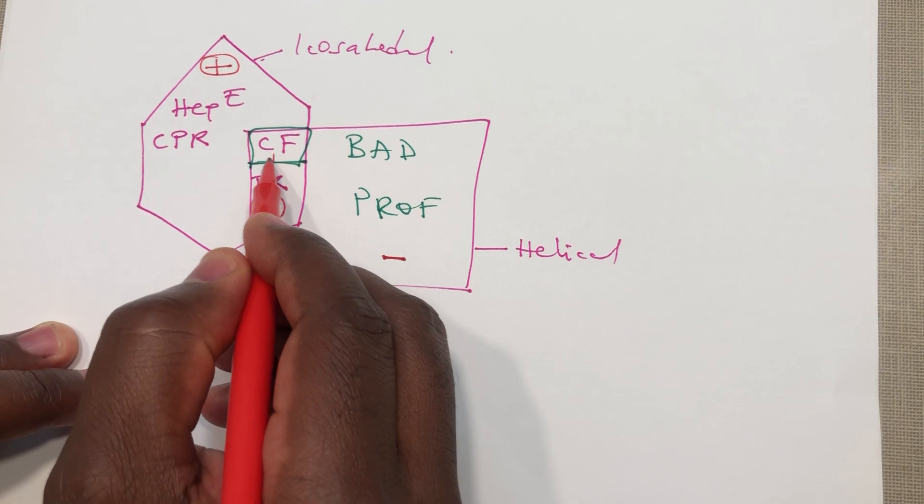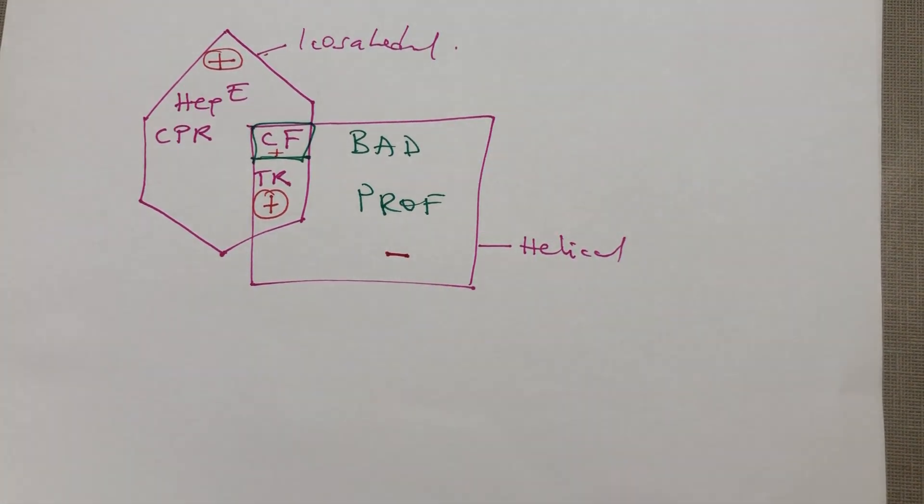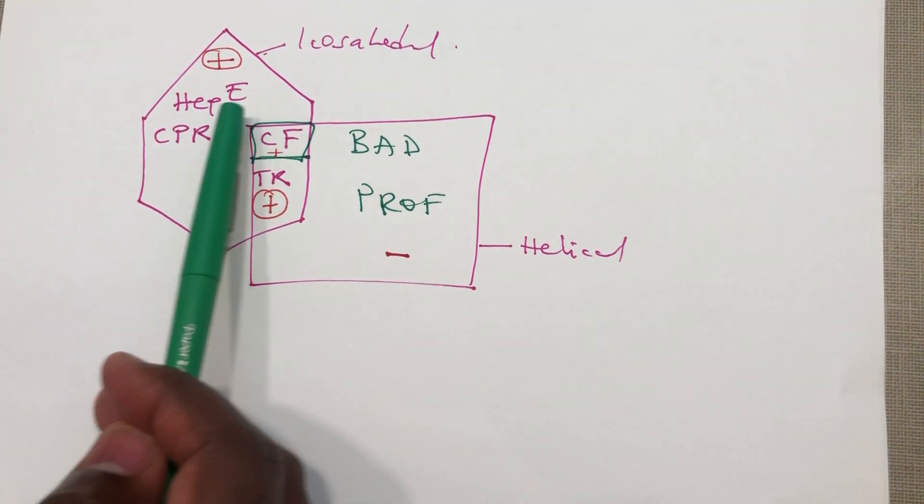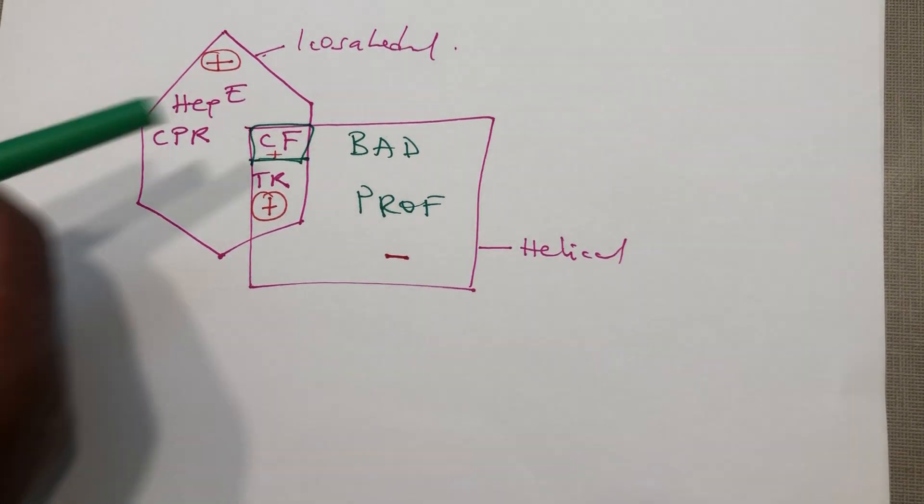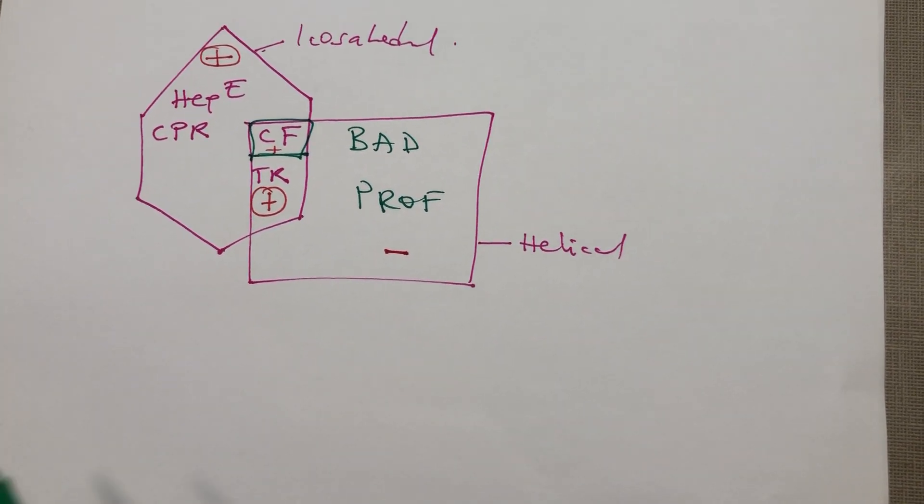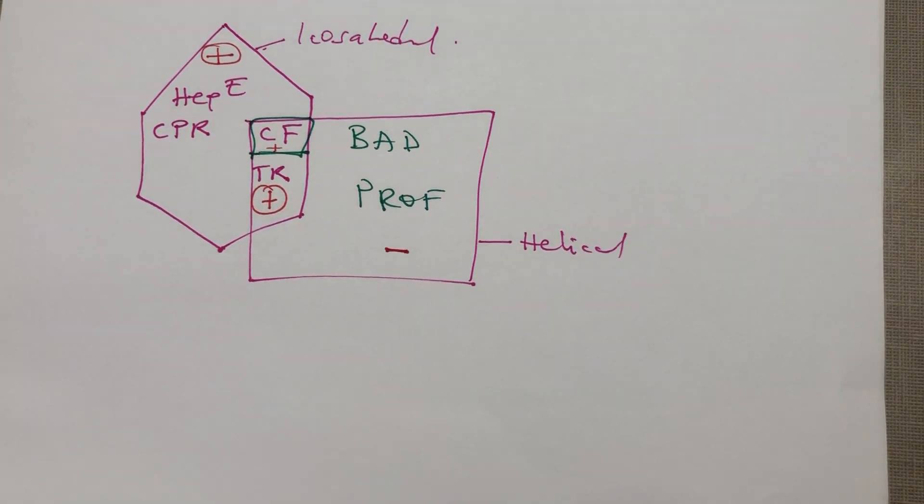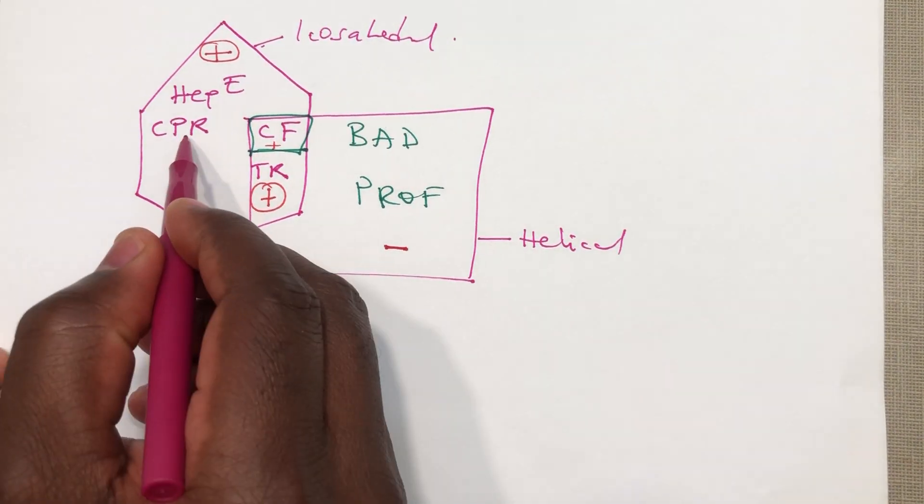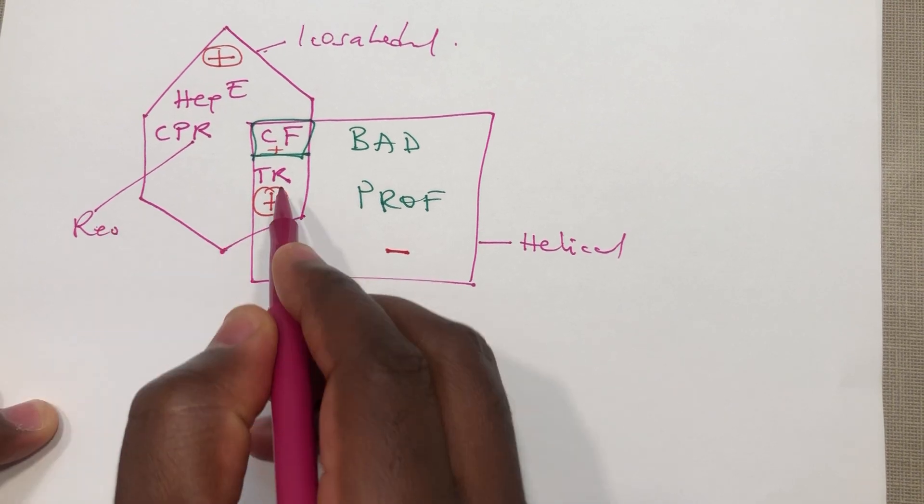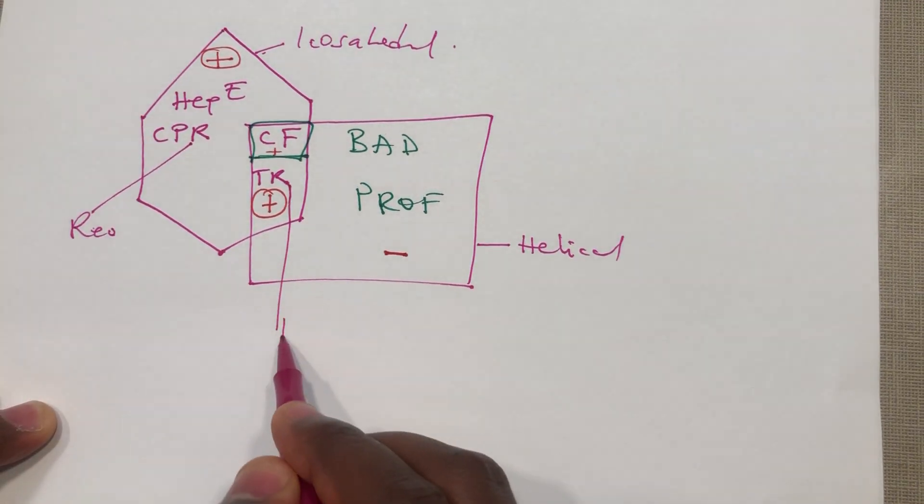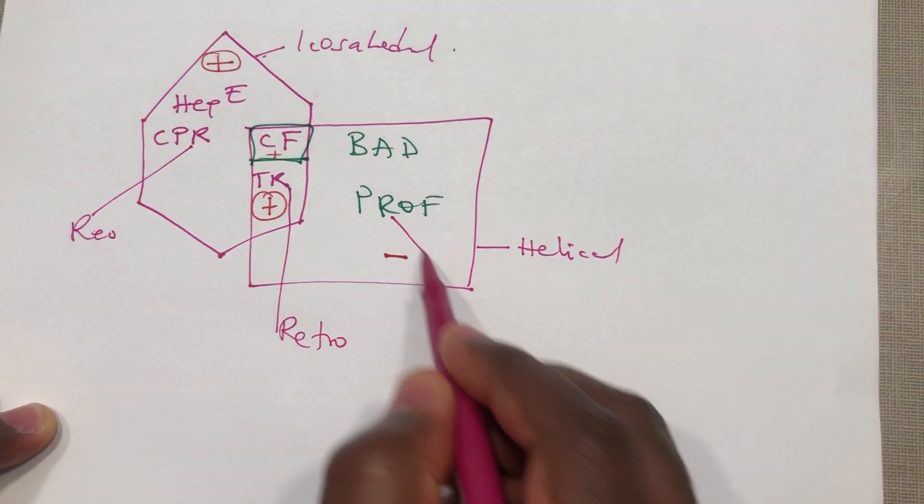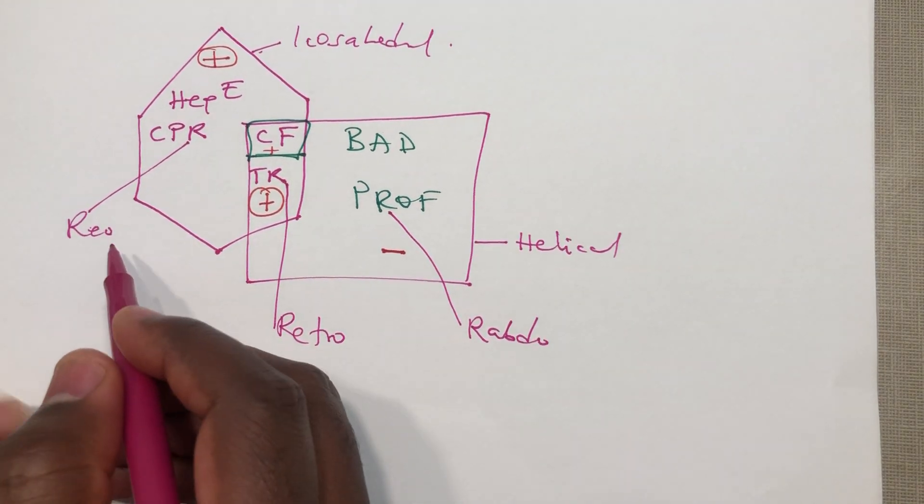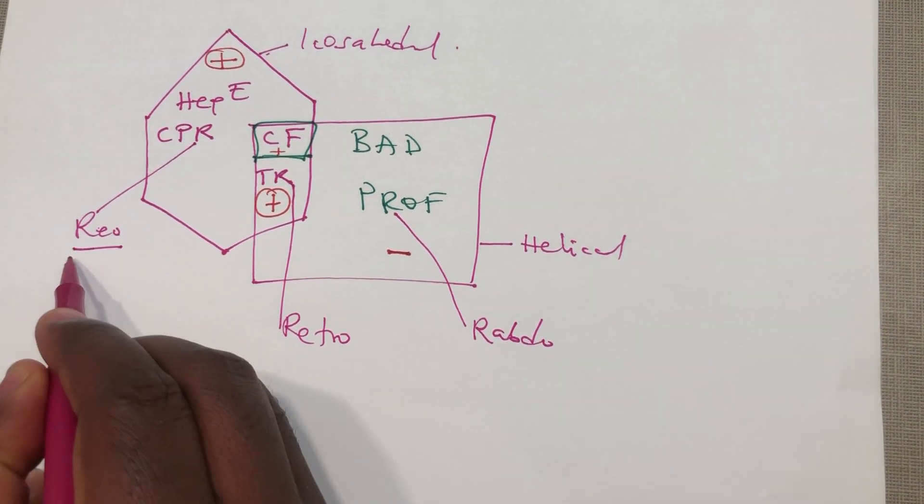Here we have hep E that causes the fulminant hepatitis in pregnant women. We have several R's in it, so I call all of them together like this: real. Here I call this one retro, rhabdo.